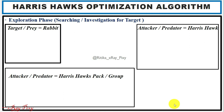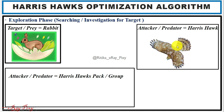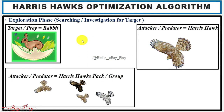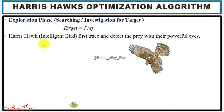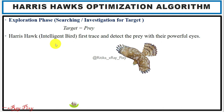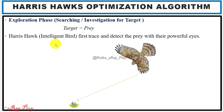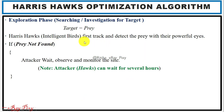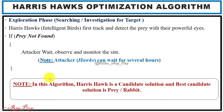The exploration phase involves searching for the target, where the attacker — the Harris Hawk — searches for the target, which is the rabbit. Hawks hunt in groups of two to seven members. They use their powerful eyes to trace and detect prey, and if prey is not found, they wait, observe, and monitor the area for several hours. In this algorithm, the Harris Hawk is a candidate solution, and the rabbit is the best candidate solution.